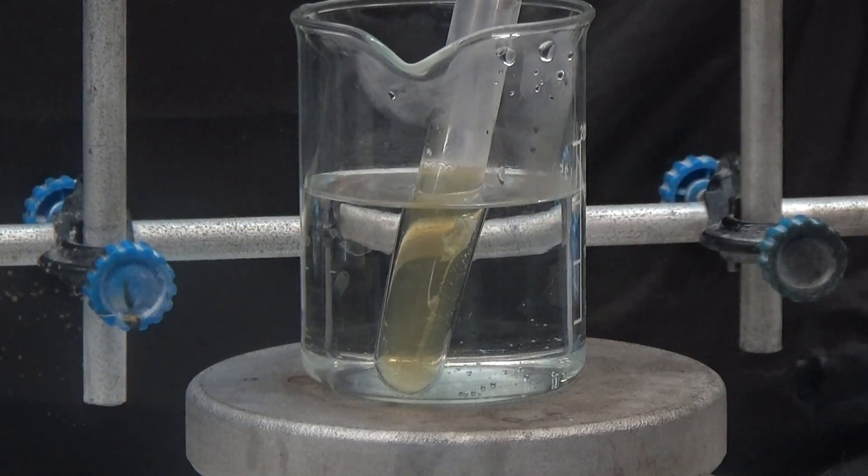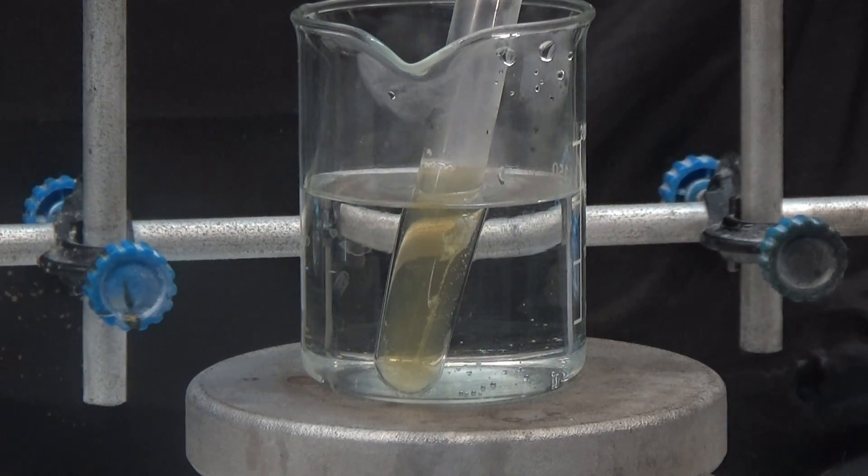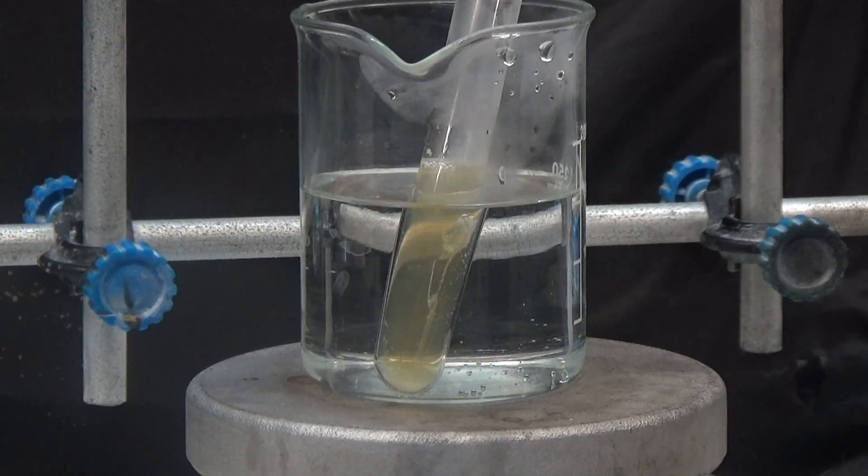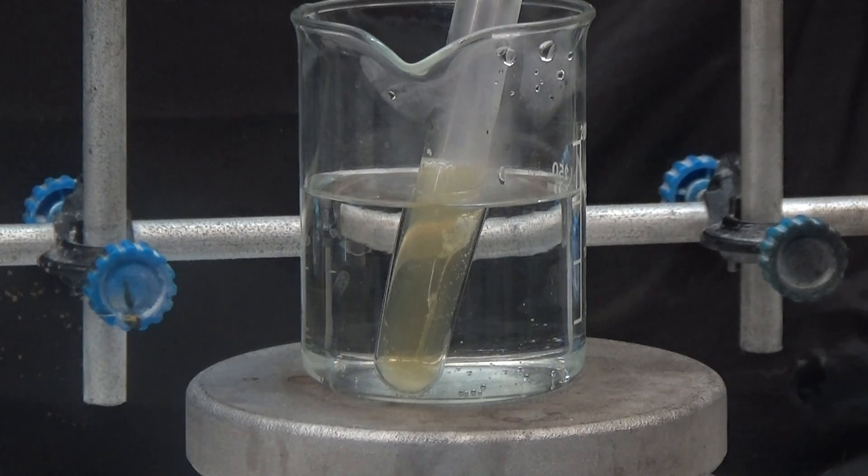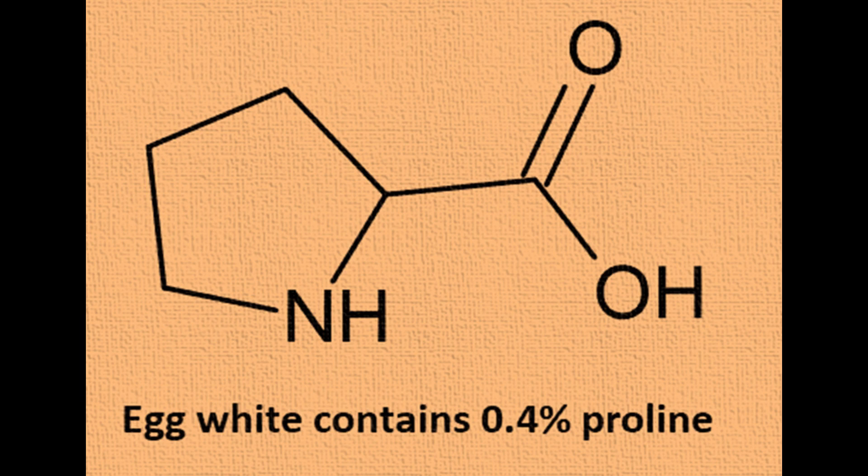In this test we had to heat longer than with glycine. Then it turns yellow because the egg white contains proline. Proline gives yellow color with the ninhydrin reagent. It does not give violet or blue because the proline has amino groups substituted.